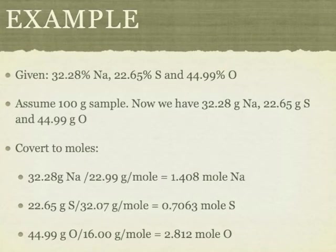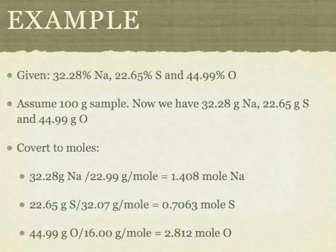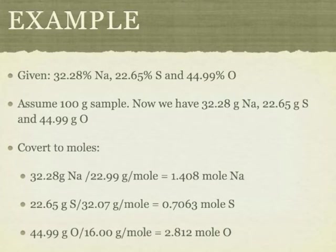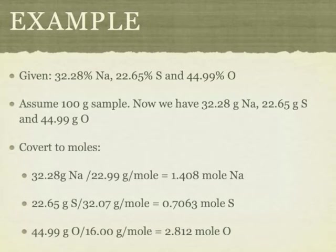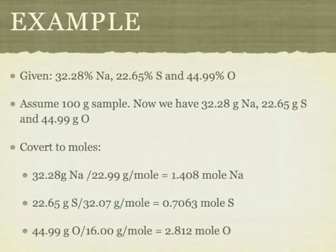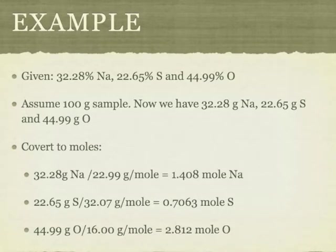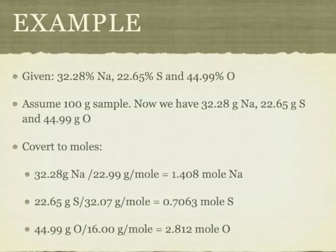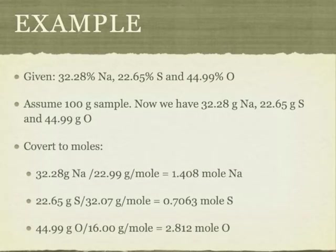Let's do an example. The problem says we're given 32.28% sodium, 22.65% sulfur, and 44.9% oxygen. Once we assume a 100 gram sample, we can convert these to gram measurements: 32.28 grams of sodium, 22.65 grams of sulfur, and 44.99 grams of oxygen.